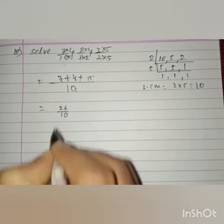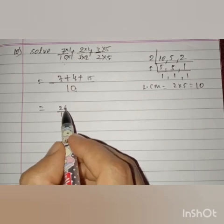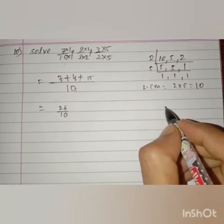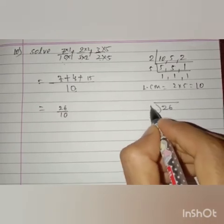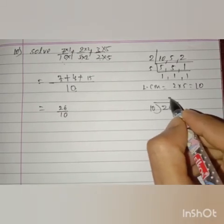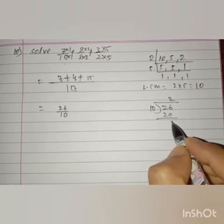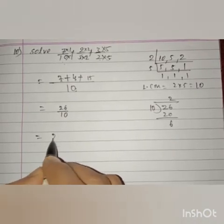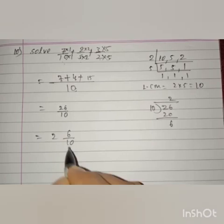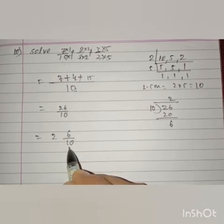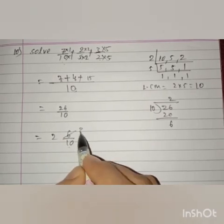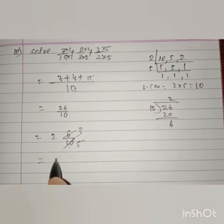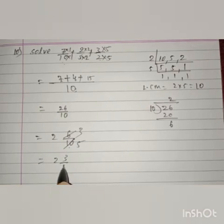26 by 10 is an improper fraction, so we convert to a mixed fraction. Dividing: 10 times 2 is 20, remainder 6. So we get 2 and 6 by 10. Since 6 and 10 are both divisible by 2, simplifying gives the final answer 2 and 3 by 5.